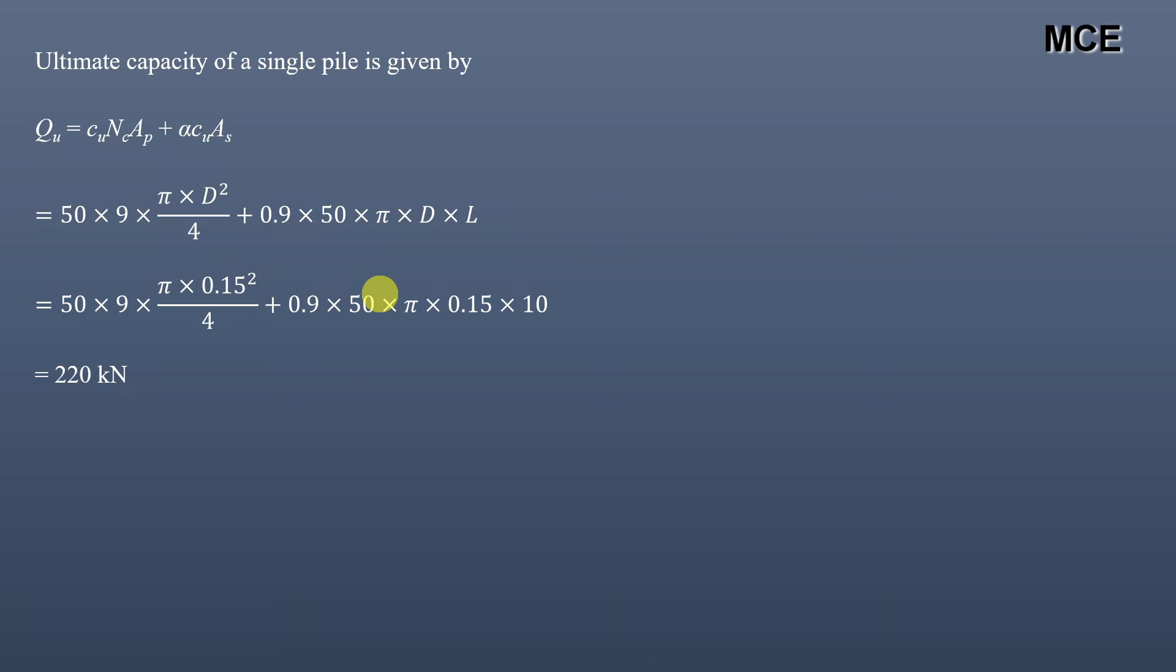This is the ultimate capacity of a single pile. Since we have to find the load capacity of the pile group, we have 9 piles, so ultimate load capacity of this pile group on the basis of individual action is equal to N × Qu. N is 9, so it will be 9 × 220 which is 1980 kN. This is the ultimate load capacity of this pile group based on the individual action.